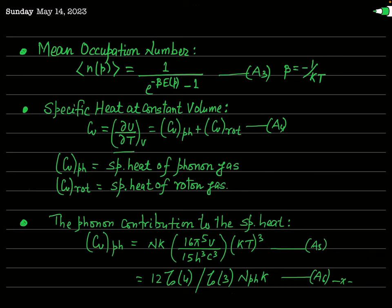The mean occupation number n(p) is given by 1 / (e^(−β·E(p)) − 1), where beta is the Boltzmann factor equal to −1/kT. Since specific heat capacity is contributed by both phonons and rotons, the total specific heat capacity of liquid helium 2, defined as ∂U/∂T at constant V, is given by CV = CV_phonon + CV_roton.